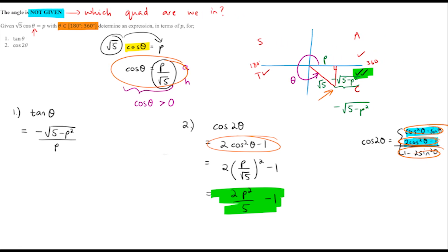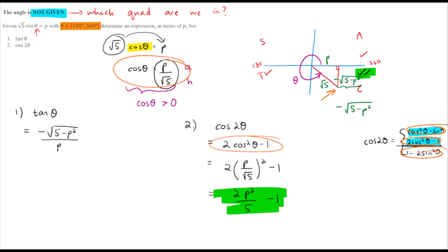The more you practice, the more easily you'll spot which identity to use. Diagram questions typically carry five or six marks — in this example, the first part was worth two marks and the second three marks. In the next video we'll look at reductions and simplification-type questions in trig, which can be a little more tricky.